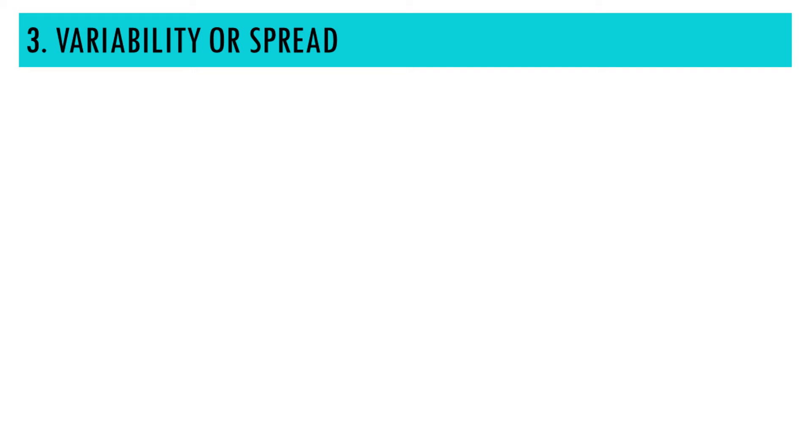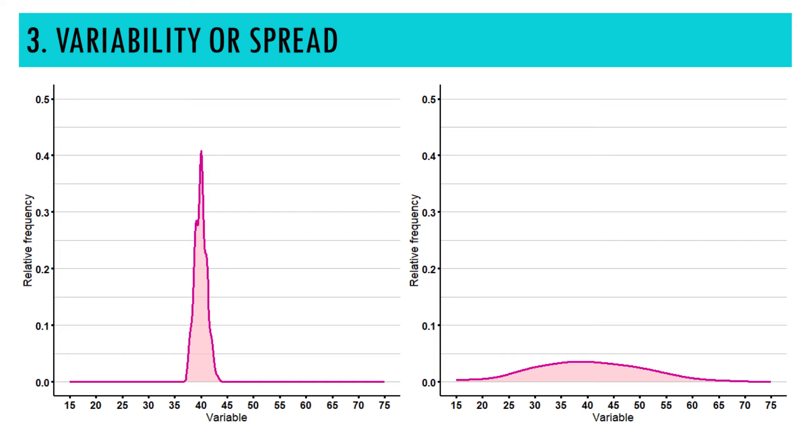Next, variability. A density distribution can tell us a lot about the spread, or variability, of the distribution. For that, we must look at the width of the density curve. A wider curve indicates greater variability, while a narrower curve suggests less variability.